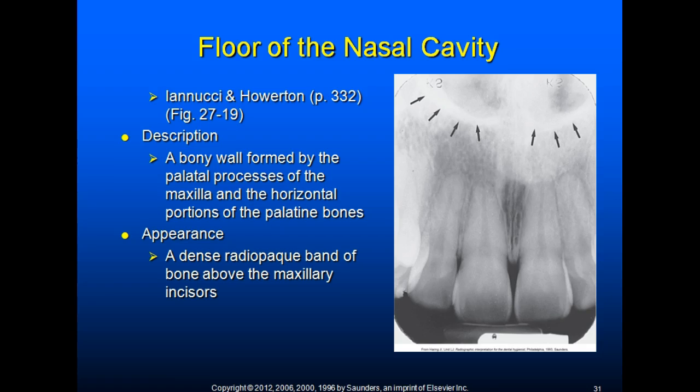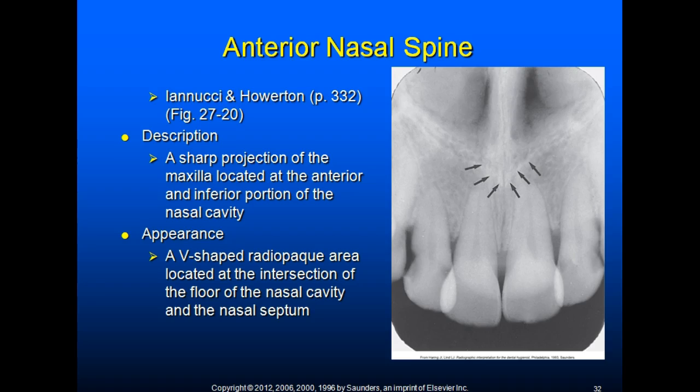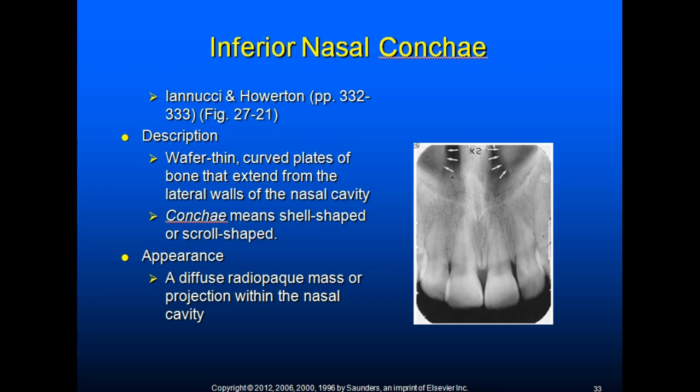The anterior nasal spine is a sharp projection of the maxilla located at the anterior and inferior portion of the nasal cavity. It appears as a V-shaped radiopaque area at the intersection of the floor of the nasal cavity and the nasal septum. The inferior nasal concha is a wafer-thin curved plate of bone extending from the lateral walls of the nasal cavity — concha means shell-shaped or scroll-shaped — and appears as a diffuse radiopaque mass or projection within the nasal cavity.